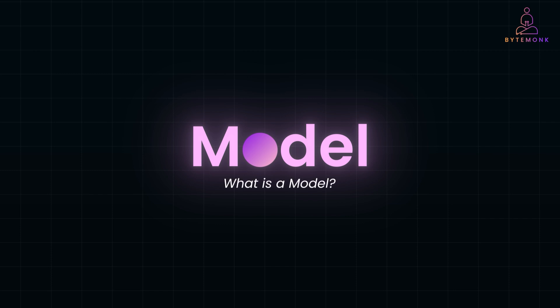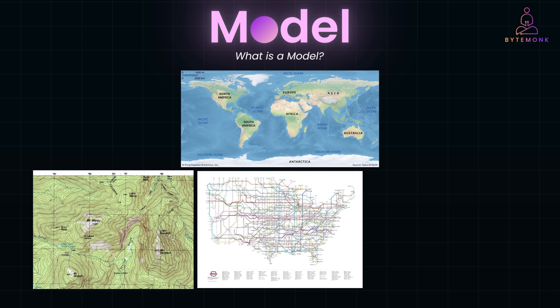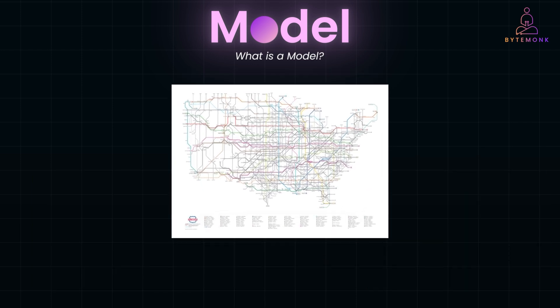Think about maps. There are many types of maps: world maps, terrain maps, subway maps, and even weather maps. Each one is designed for a particular purpose. For instance, a subway map doesn't show distances or geography — it focuses only on routes and stops to help you navigate the transit system. In software, a model works the same way. It simplifies a business domain, leaving out unnecessary complexity, so engineers can focus on building the right solution.